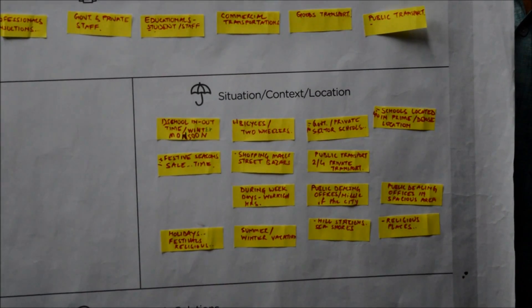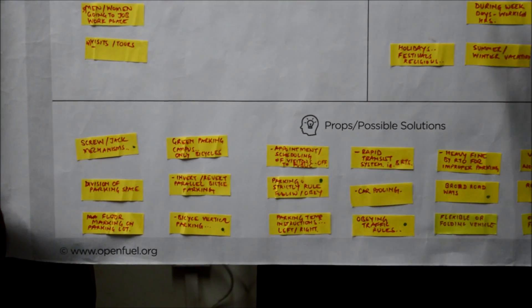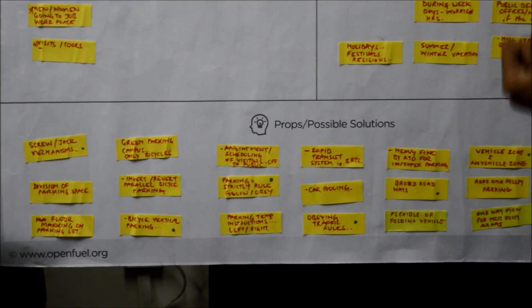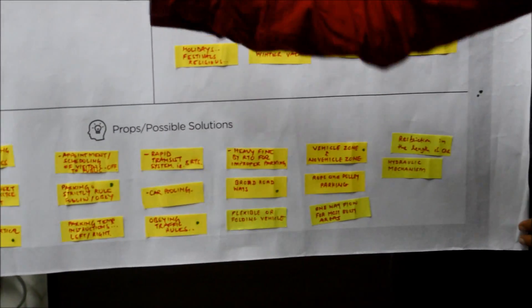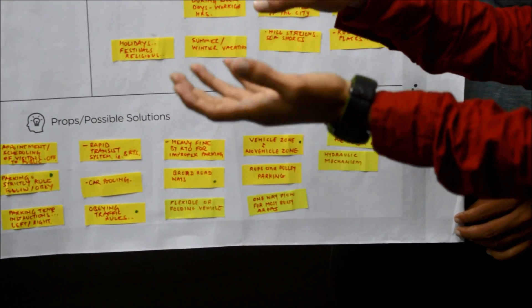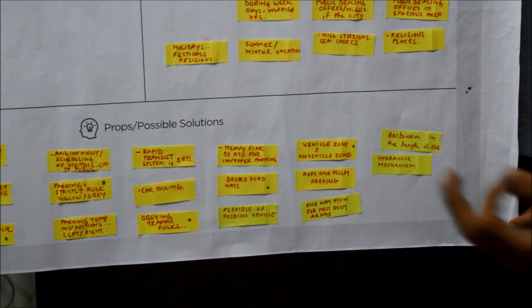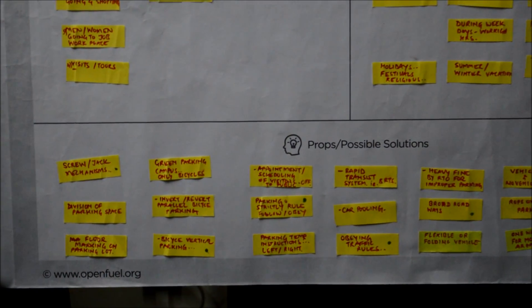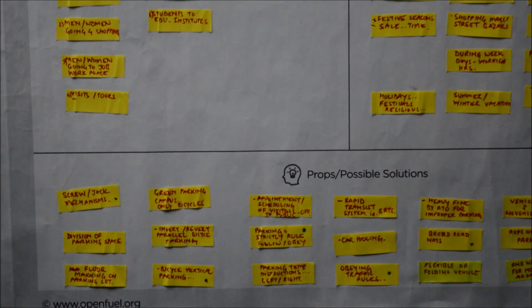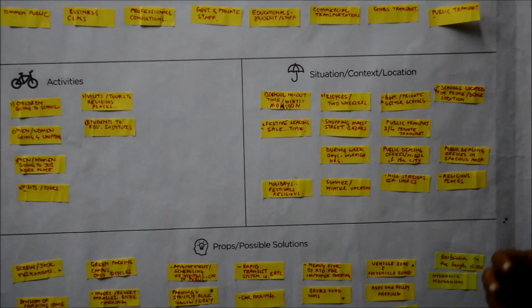The last part is the possible solution for all these situations and locations — solutions which directly affect the location or situation. For the activity of children going to school, where the situation is school in/out or monsoon, and children use a bicycle or two-wheeler, the possible solution is timing management. Otherwise, you can use a parking system for better utilization of space.